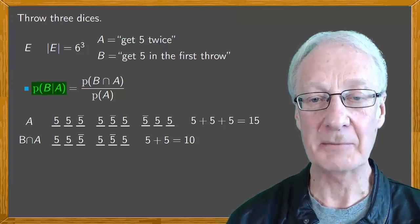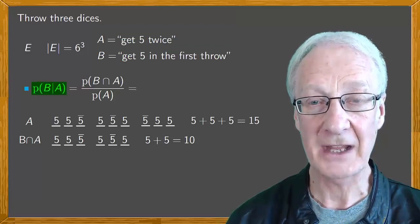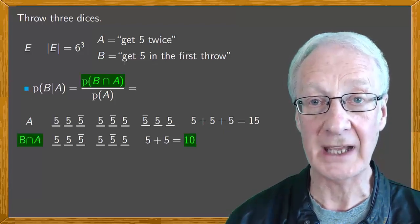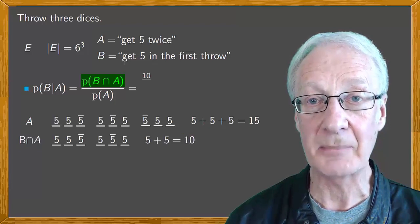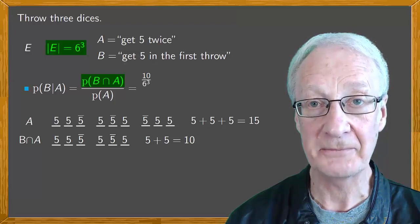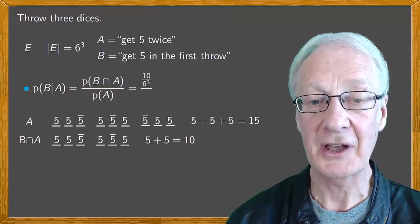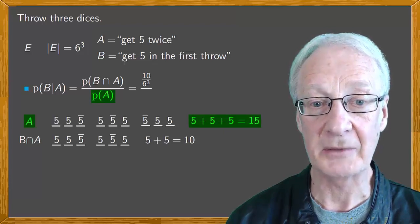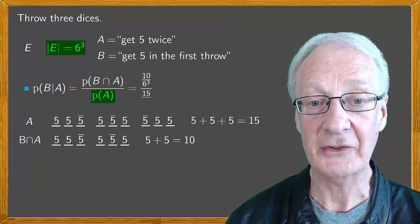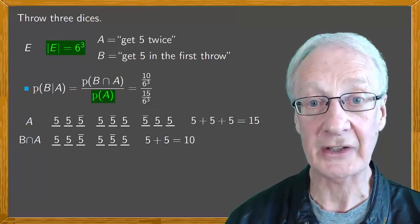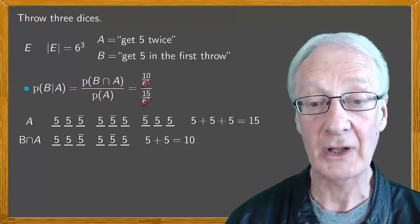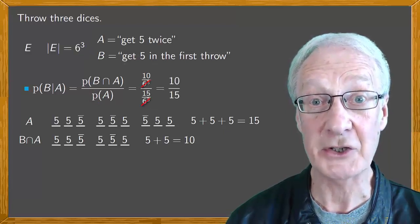If we now calculate the probability of B conditional on A, the probability of the intersection is the number of favorable cases, ten, divided by the number of possible cases, six cubed, and we divide this by the probability of A, which is the number of favorable cases, fifteen, divided by the possible cases, which is six cubed. The six cubed factors cancel out, and we're left with ten over fifteen, which simplifies to two over three.